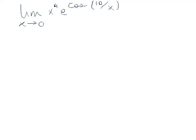In this video I want to evaluate the limit as x goes to 0 of x to the 4th times e to the cosine of 10 divided by x. I can't evaluate this limit by substituting 0 in for x because that would make 10 over x undefined, so I'm going to use the squeeze theorem to evaluate this limit.